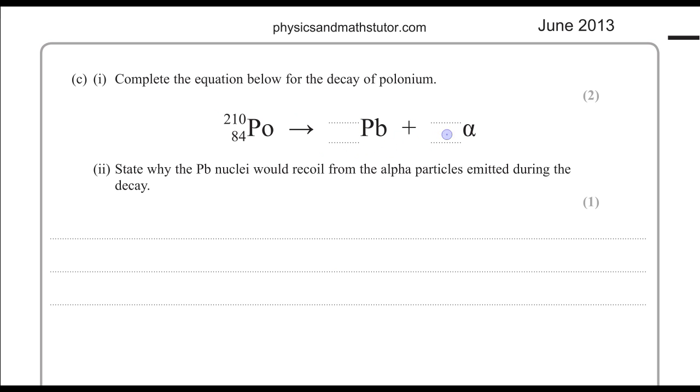We can start with the alpha particle because we wouldn't necessarily know the mass and atomic numbers of the lead. But we should be remembering what the mass number and the proton number for an alpha particle is. And they are 4 and 2. Which tells you that the alpha particle has two protons and two more neutrons.